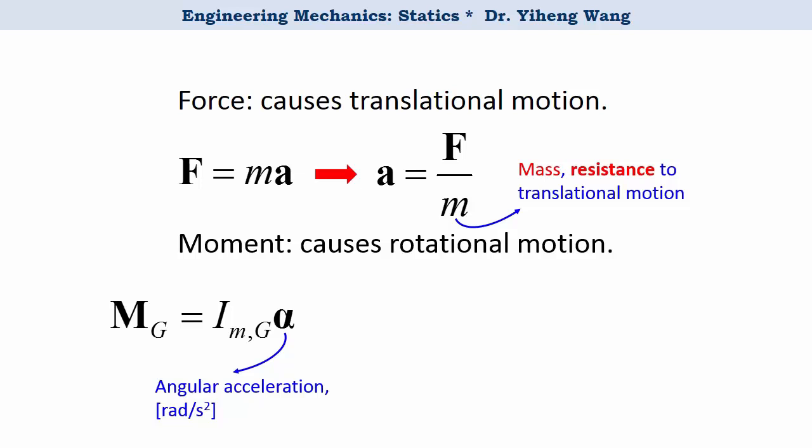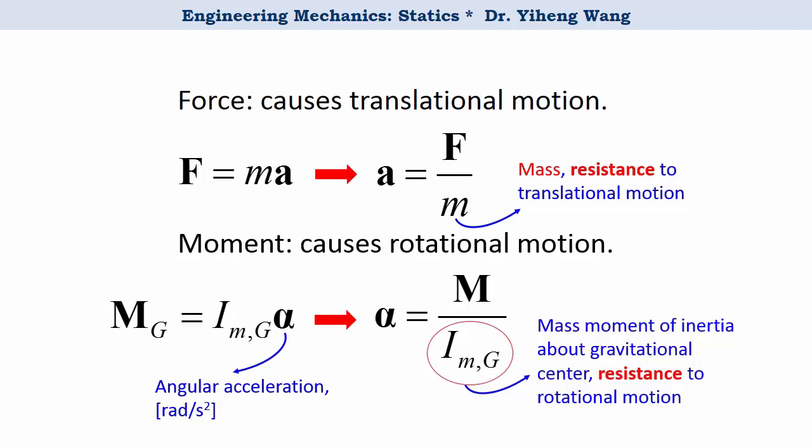Again, we can rewrite this equation into this form, and if you compare it to the equation above, you can tell that this term, I_m, is the resistance to rotation, and it is known as the mass moment of inertia. Note that I put the subscript m here, because I will also discuss area moment of inertia in this same video, and I want you to be able to distinguish between them. But oftentimes you will see it without the subscript m.